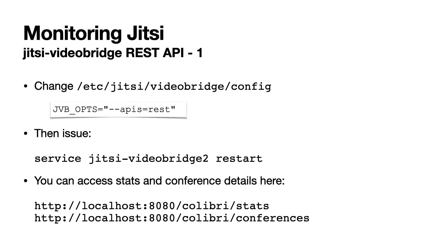The Jitsi Videobridge comes with a REST API that has endpoints for common stats and the conference rooms. You can activate the web service by editing the /etc/jitsi/videobridge config file. Once you've done that, you should run service jitsi-videobridge restart, and after that you can access the stats and conference details via the REST API.